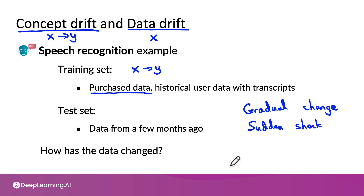When you deploy a machine learning system, one of the most important tasks will often be to make sure you can detect and manage any changes — including both concept drift, which is when the definition of what is Y given X changes, as well as data drift, which is when the distribution of X changes, even if the mapping from X to Y does not change.